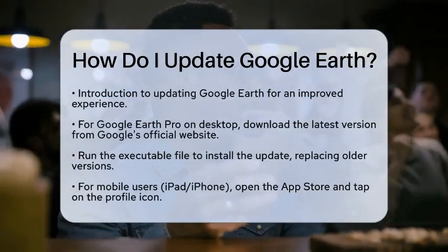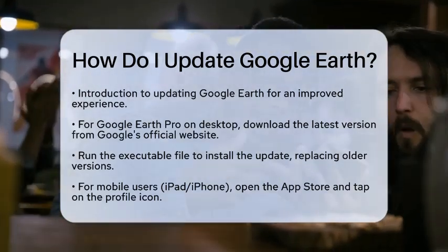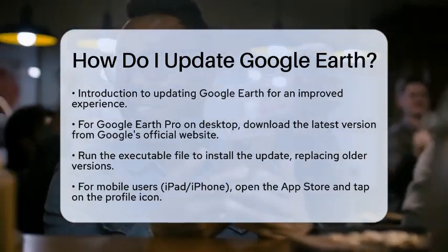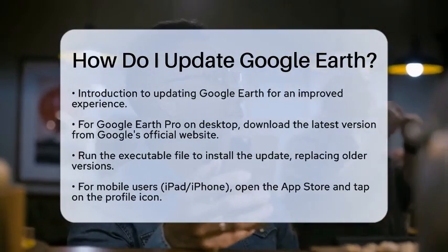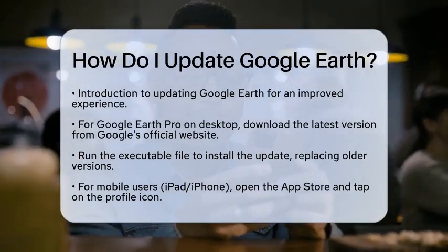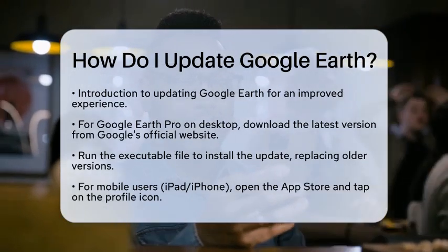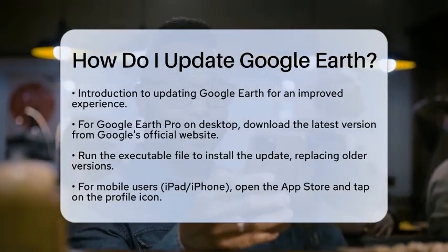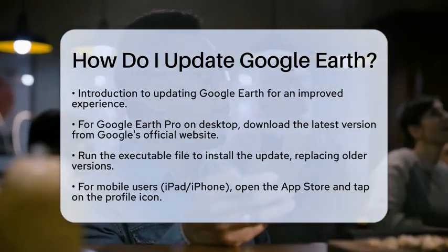First, if you are using Google Earth Pro on your desktop, you will need to download the latest version directly from Google's official website. Once you have the file, simply run the executable file to install it. This process will replace any older versions you might have on your computer.